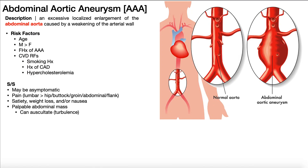In this video, we're going to be talking about the abdominal aortic aneurysm, or AAA (triple A). An abdominal aortic aneurysm is normally abbreviated triple A, and it is really just an excessive localized enlargement of the abdominal aorta caused by weakening of its arterial walls.